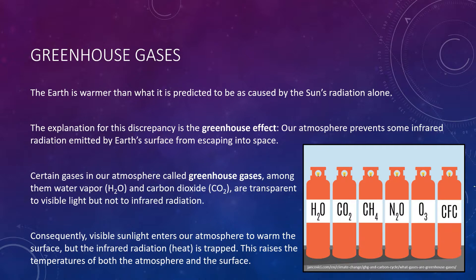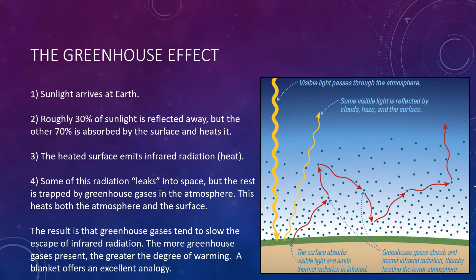Let's take a look at a graphic of how this works and step through it once more. Sunlight first arrives at the Earth, as you can see by the yellow arrow. Roughly 31% of sunlight is immediately reflected back by clouds and the surface, but the other 69% is indeed absorbed by the surface, which heats it.